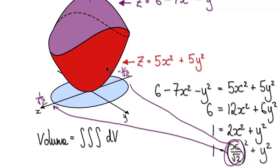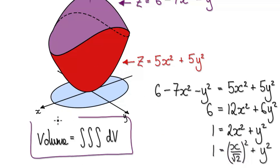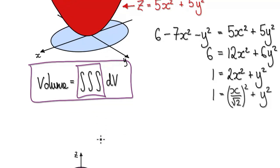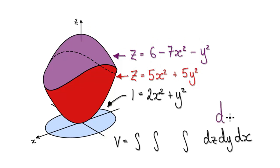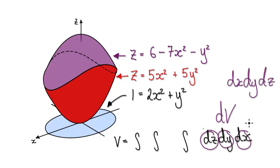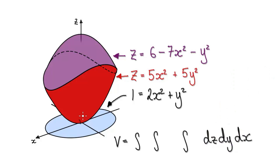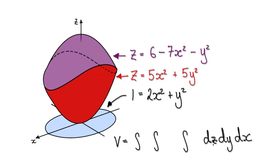To work out the volume, the volume is given by the triple integral. We now need to set up our limits of integration. We have a choice of using dx, dy, or dz, but in this case I want to use dz first. Using dz first means we have to move parallel to the z-axis.